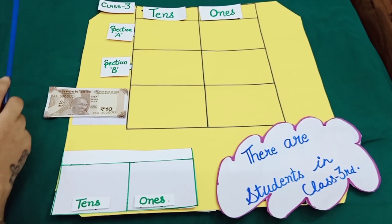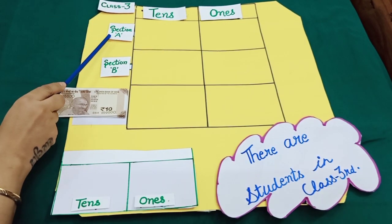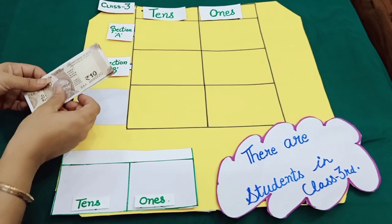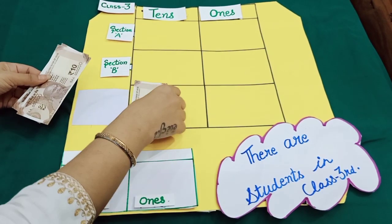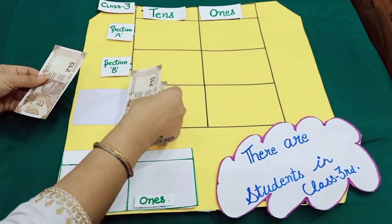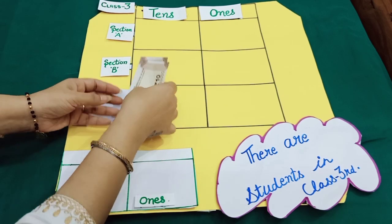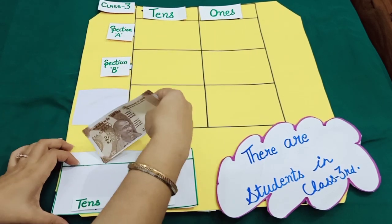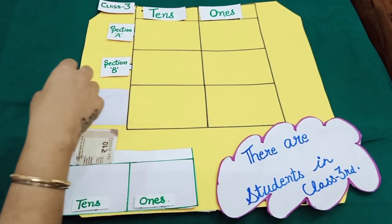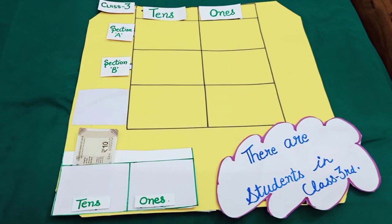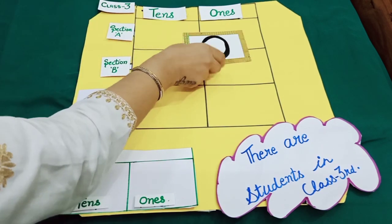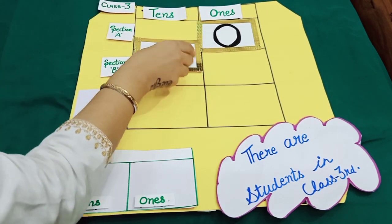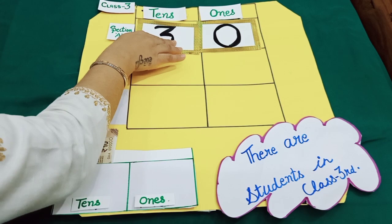There are 30 students in section A. Let's count: 10, 20, 30. And you know, 30 is equal to 3 tens. So, my dear students, 0 at ones place and 3 at tens place.